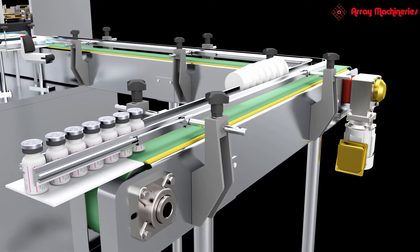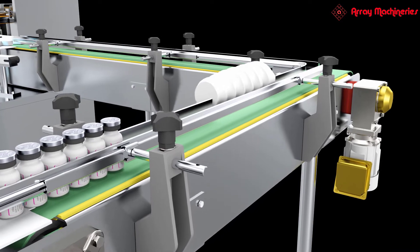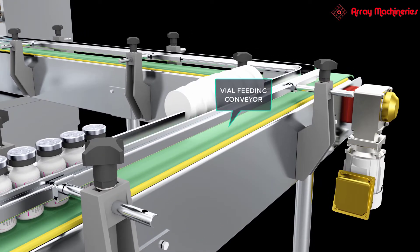Array Machineries deals in the field of packaging and filling machines. At first, vials get fed through a vial feeding conveyor.